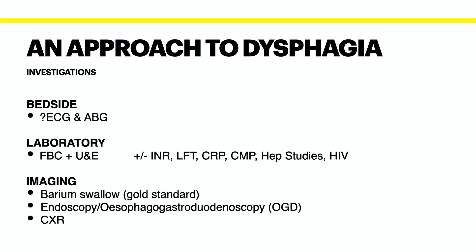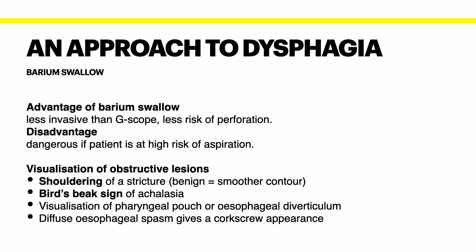How would we go about imaging a patient with dysphagia? We have three main approaches: a barium swallow, endoscopy, and x-rays. A barium swallow is typically the gold standard when it comes to dysphagia because it gives you a roadmap should surgery be required. You can identify perforations or fistulae, and it has the advantage of being less invasive than a scope, especially if you suspect webs or diverticula in the esophagus where a G-scope might cause perforation.